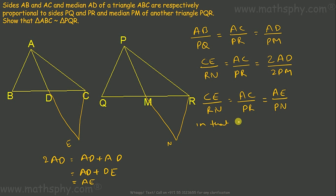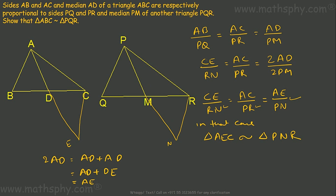Since CE/RN = AC/PR = AE/PN, triangle AEC is similar to triangle PNR by the SSS similarity criterion, as all corresponding sides are proportional.